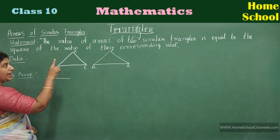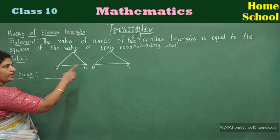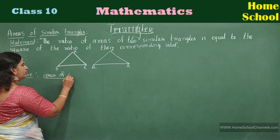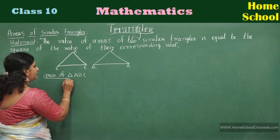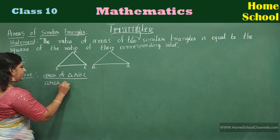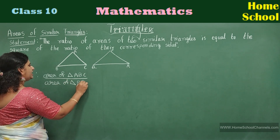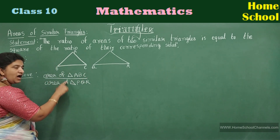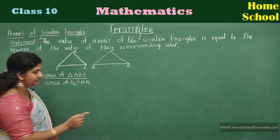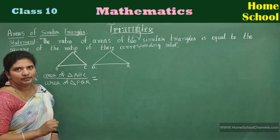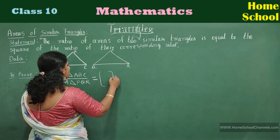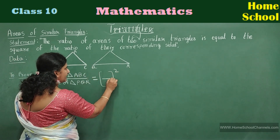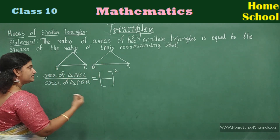The ratio of areas of two similar triangles — what are the two triangles? Triangle ABC and triangle PQR. So, area of triangle ABC by area of triangle PQR. The ratio of areas of two similar triangles is equal to the square of the ratio of their corresponding sides.